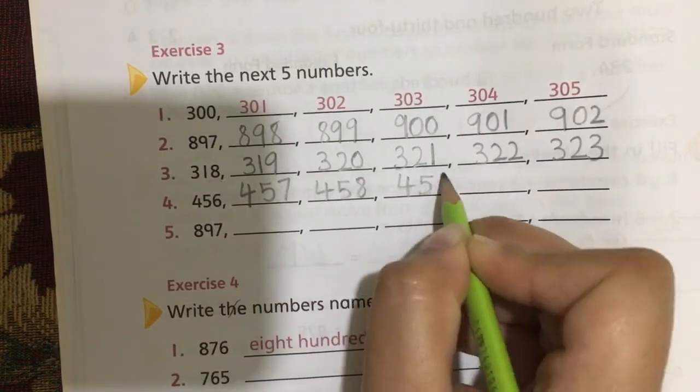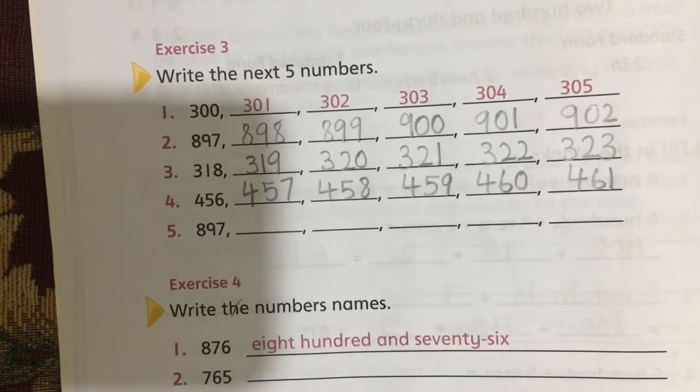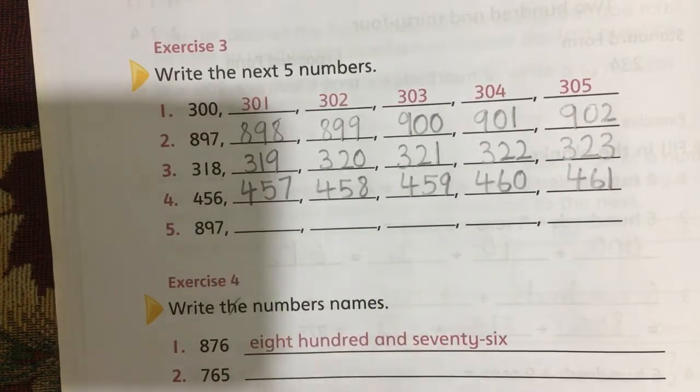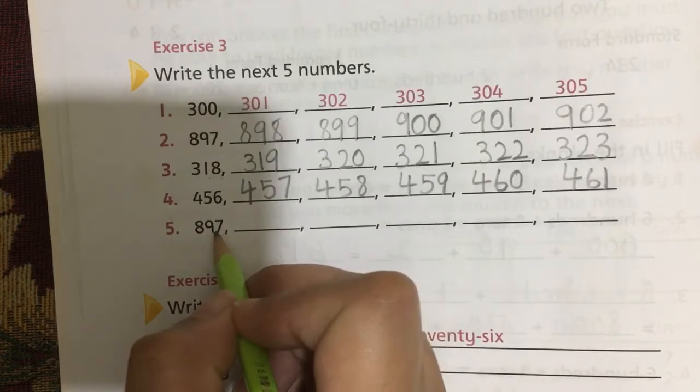458, 459, 460, 461. These are the next five numbers after 456. The last question is 897. This is the same.